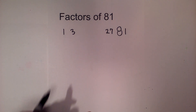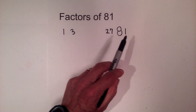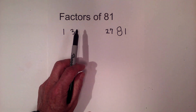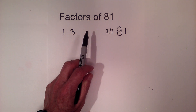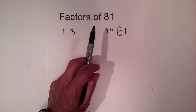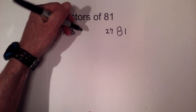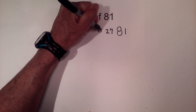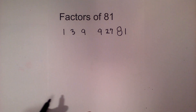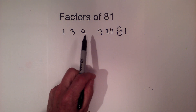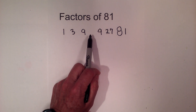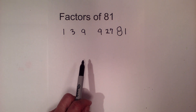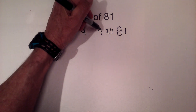Now will 4 go into 81? No. 5 will not, 6 will not, 7 will not, 8 will not — but 9 times 9 equals 81. And there are no numbers between 9 and 9, so I know that we have reached all our numbers.